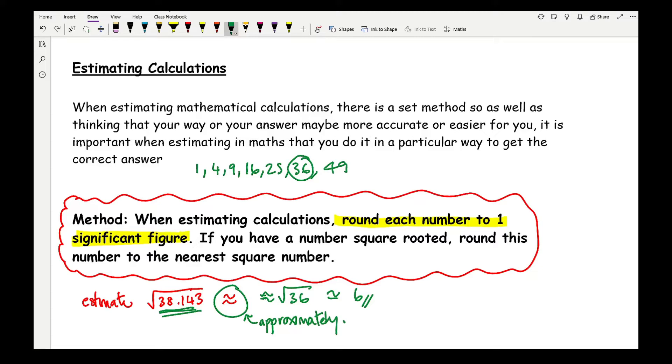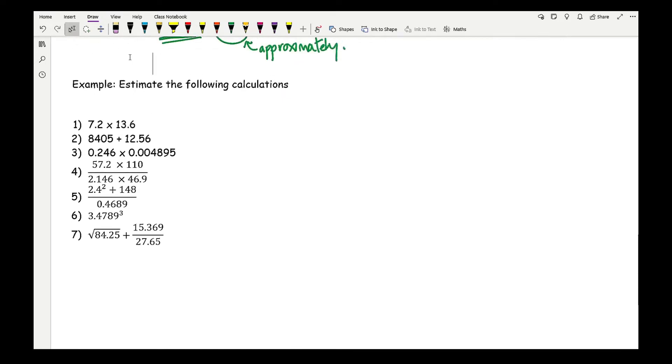But for all of the numbers where you don't have a square root, you always round up to one sig fig. Now the best way for that to make sense is for us to go through some examples. So let's do just that.